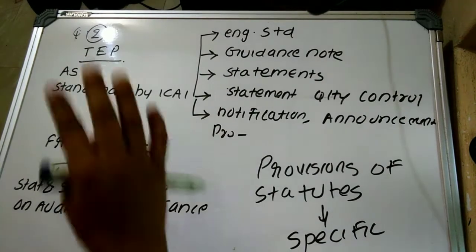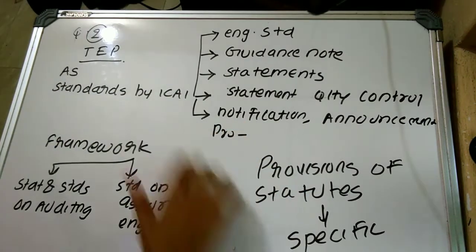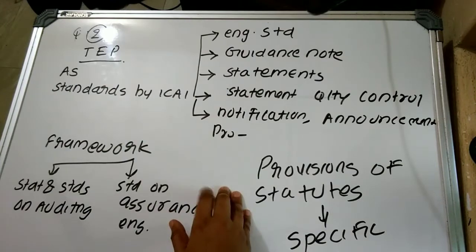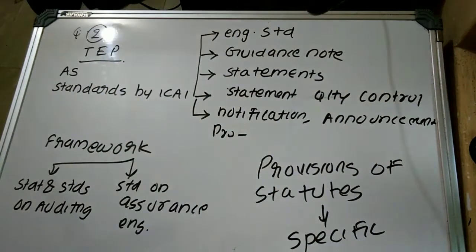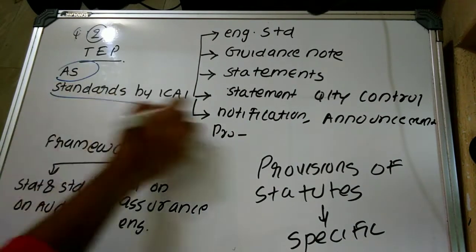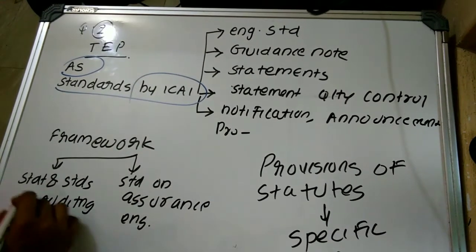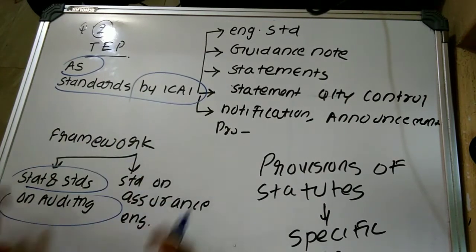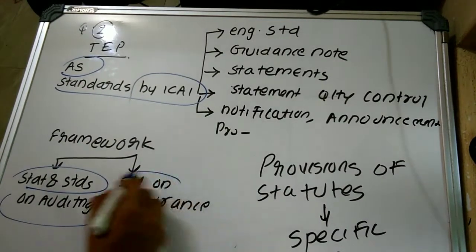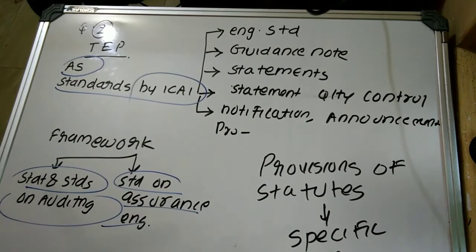The question asks for short notes on what these technical, ethical, and professional standards are. Technical, ethical, and professional standards as per the statements on peer review include: accounting standards by ICAI, the framework for statements and standards on auditing, and the framework for standards on assurance engagements.